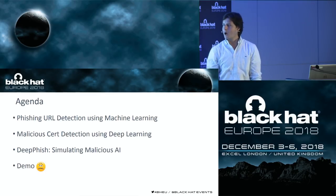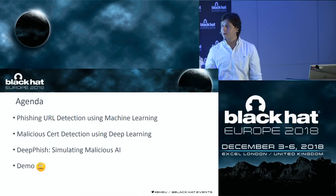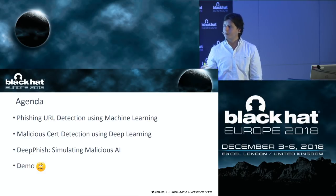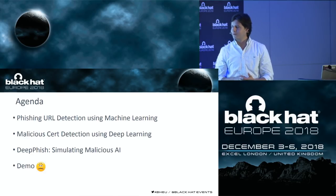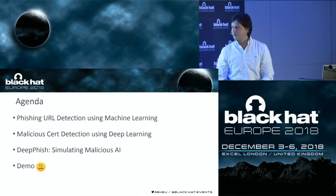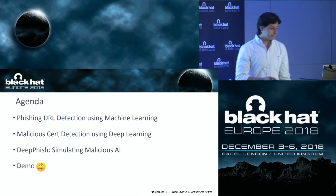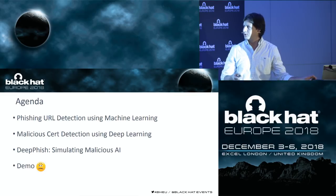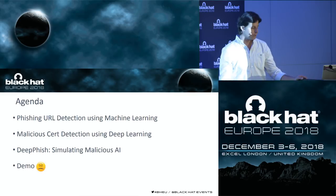First, I'm going to talk about machine learning for detecting phishing URLs. Then deep learning to detect malicious certificates. Lastly, the third paper: DeepPhish — simulating malicious AI. And for some reason I decided to do a live demo, so let's see how that goes. I'm very proud that I was able to put all the buzzwords in one slide.